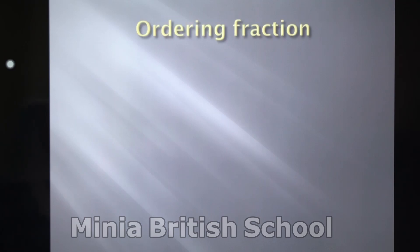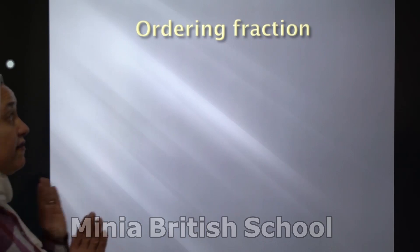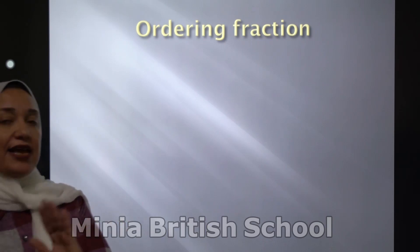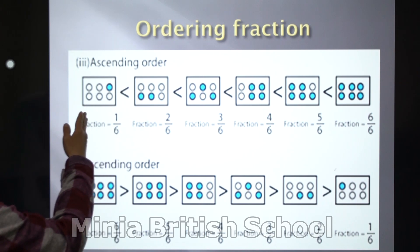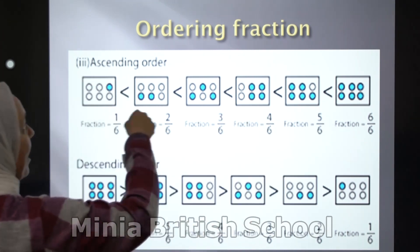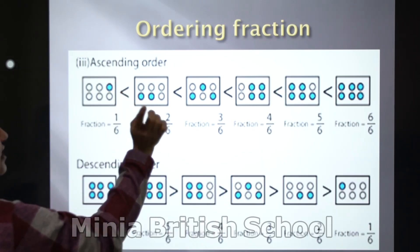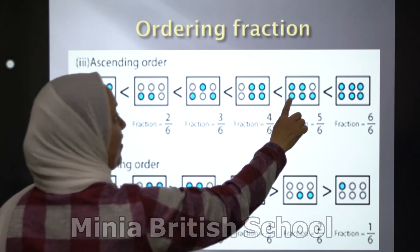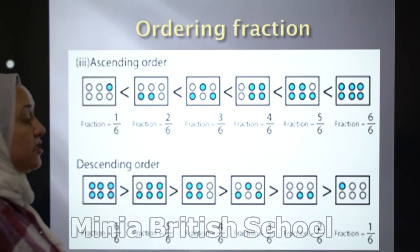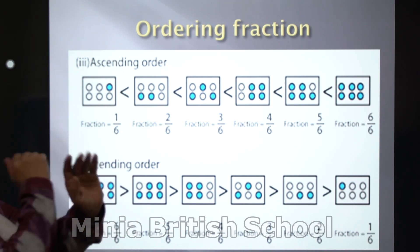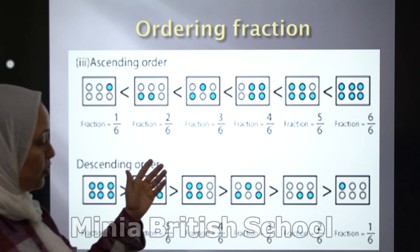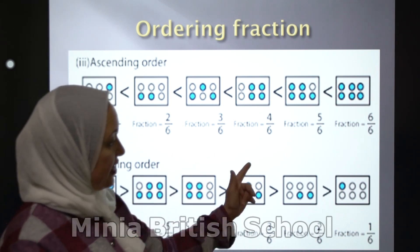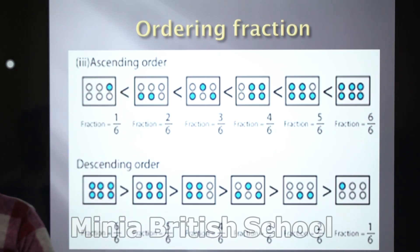Ordering fractions. What's the meaning of order in fractions? Order in fractions is like numbers: ascending and descending order. Ascending order starts from the smallest to the greatest. Look at the figures: 1 over 6, 2 over 6, 3 over 6, 4 over 6, 5 over 6, and 6 over 6 is the greatest. Descending is the opposite of ascending — from greatest to smallest: 6 over 6 greater than 5 over 6 greater than 4 over 6 greater than 3 over 6, then 2 over 6, and the smallest is 1 over 6.